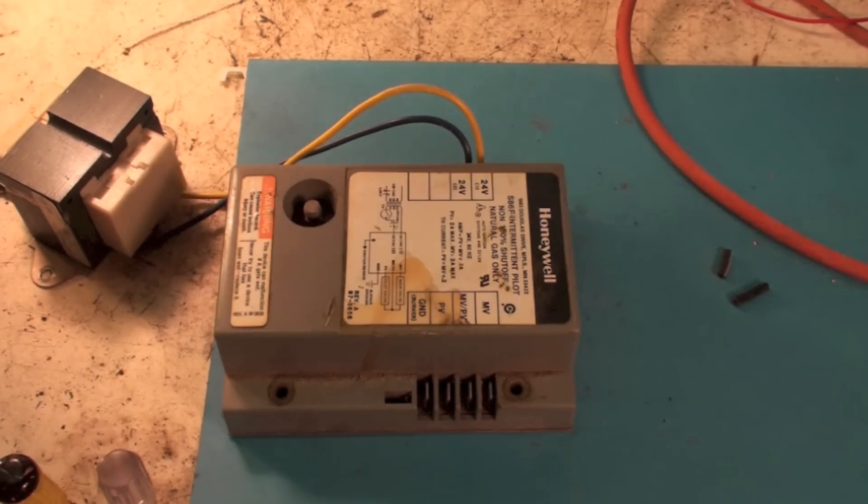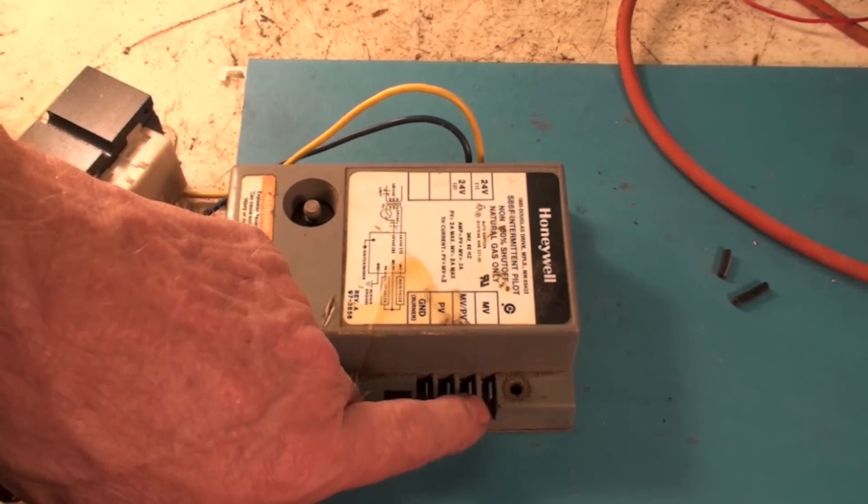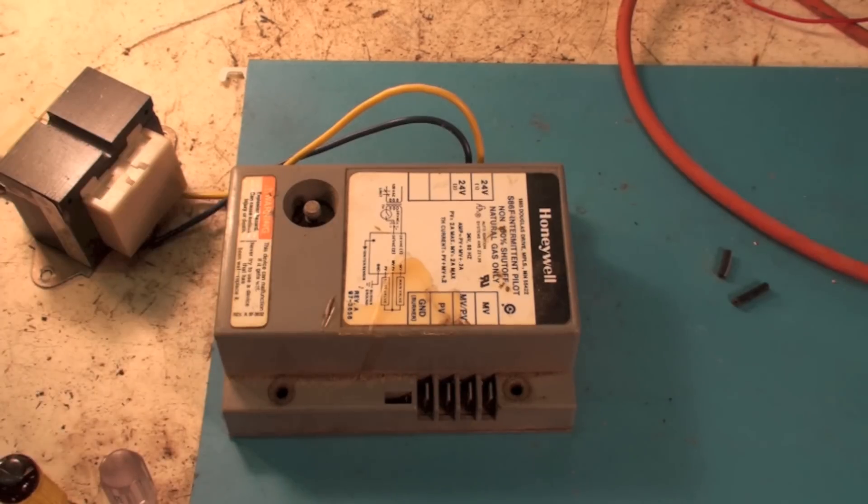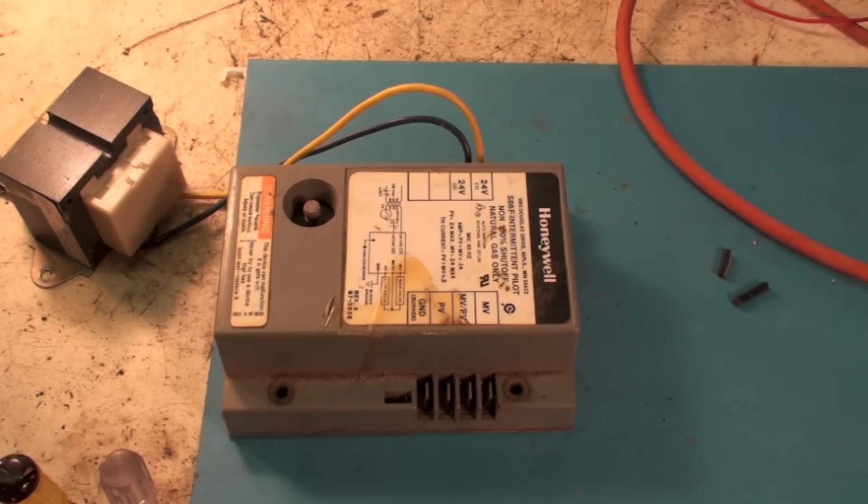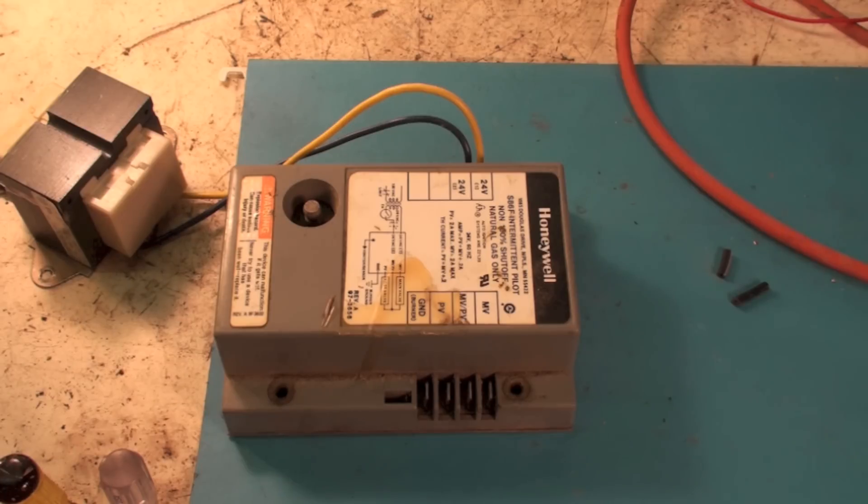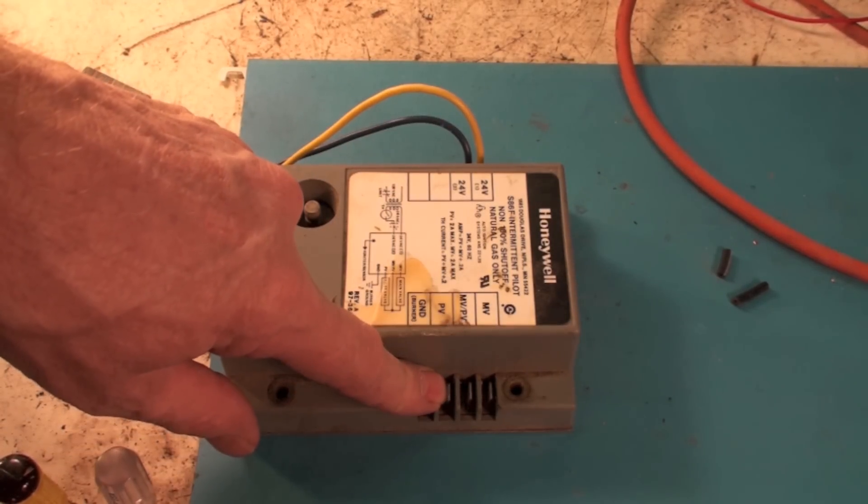So if I had 24 volts coming into the 24 volt side and I put my probe from MVPV to PV, I should get 24 volts. MVPV is just common, and MV of course is main valve and PV is pilot valve. If I got nothing out of the control, then the control is giving trouble. If I've got 24 volts coming out of the control, then I got a problem in wiring or the gas valve.